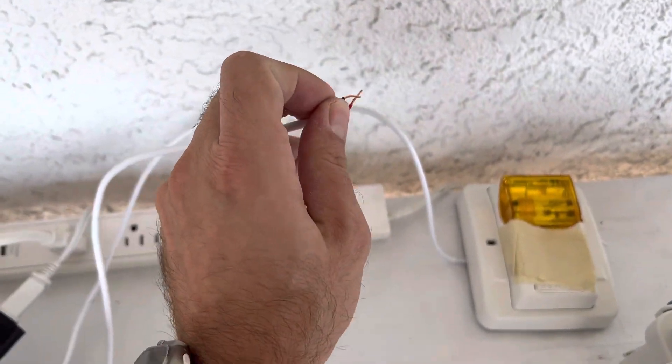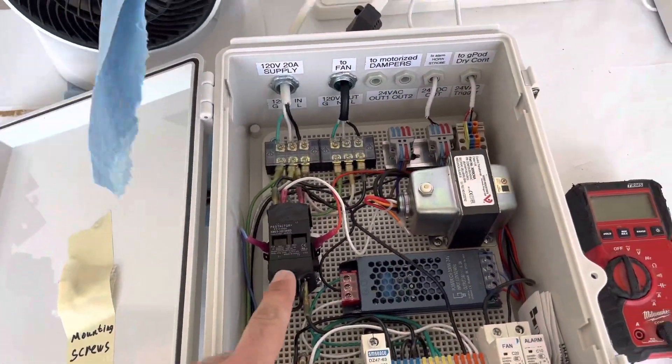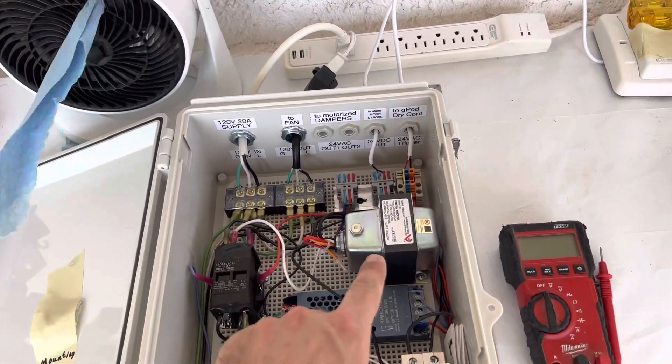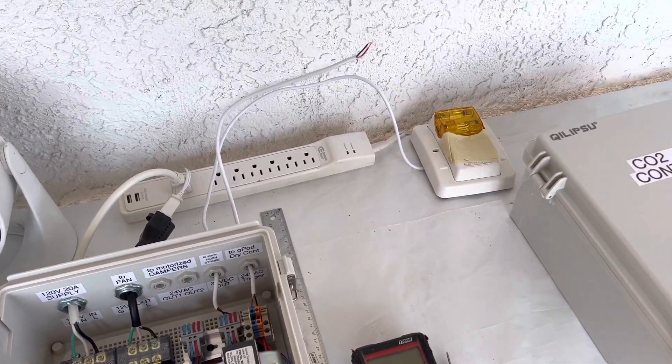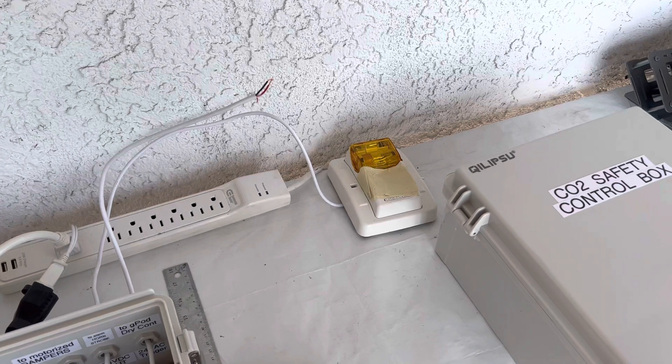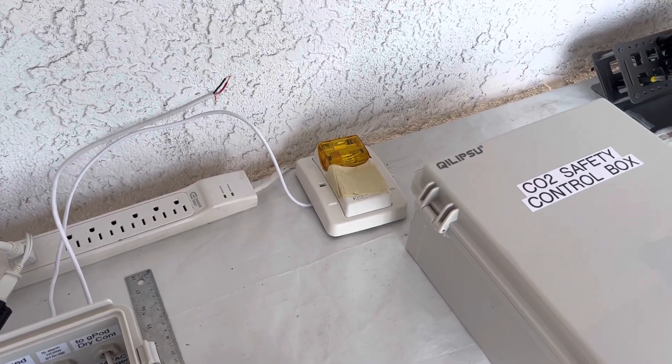When this trigger happens, the contactor closes, gives power to the fan, gives power to motorized dampers - they open - and to the alarm. This alarm is also flashing right now, but you can't see it because the video records this way.